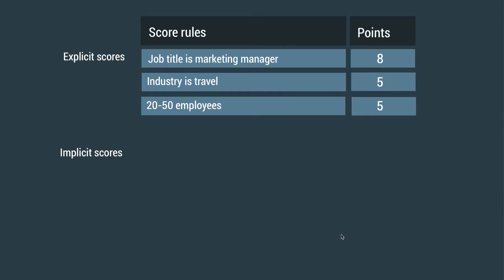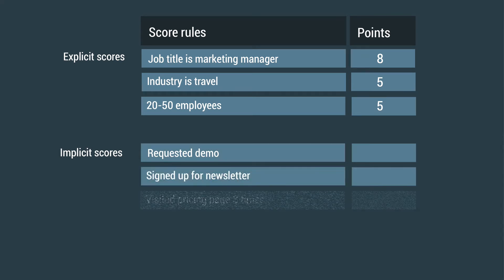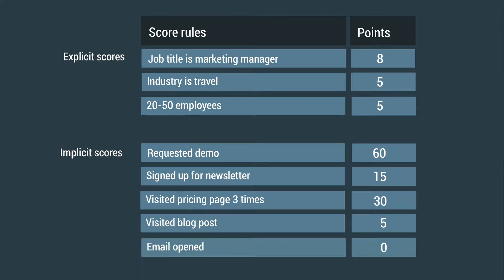Looking at sales conversion for your rules will really help you now, because you need to set how many points a lead should get when they fulfill a certain rule. Some rules lead to a sale more often than others. For example, a registration for a product demo probably leads to a sale more often than a newsletter sign-up, and a web visit to your pricing page is closer to a sale than a visit to the blog. Set points to your rules based on how close they are to a sale — the closer, the higher the points. Remember you could also combine criteria: an email opened by itself might not be worth many points, but combined with an email click and five visits to your web page, it might show the lead is more interested and you can score accordingly.